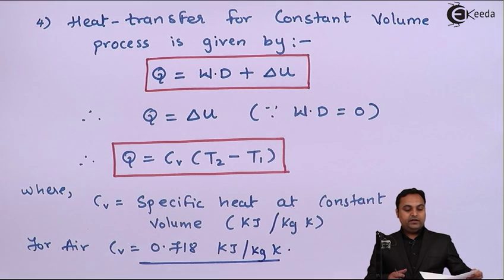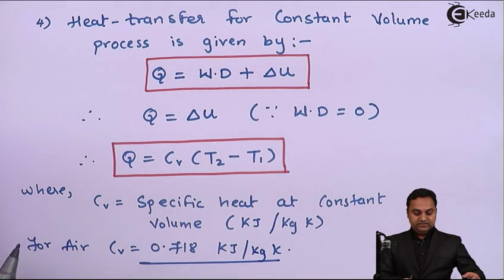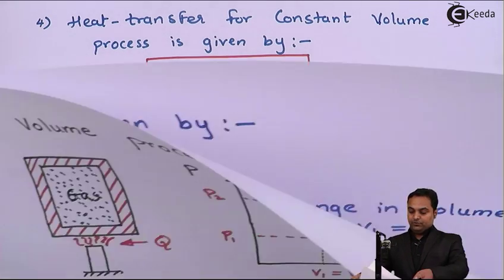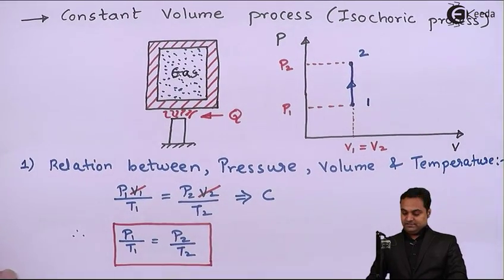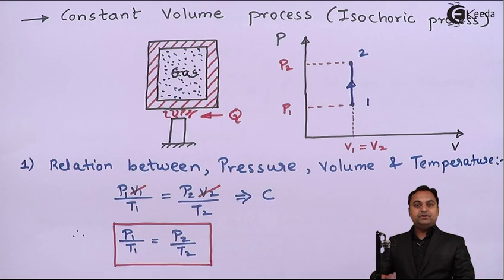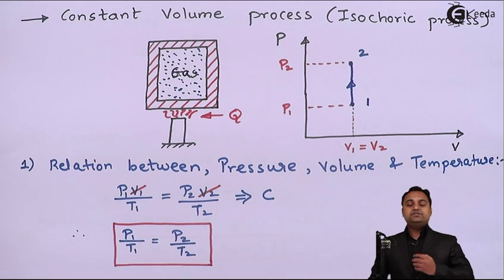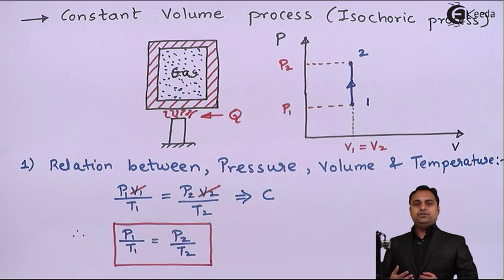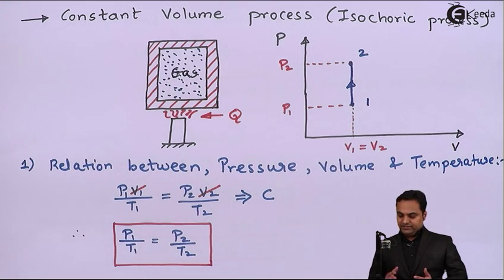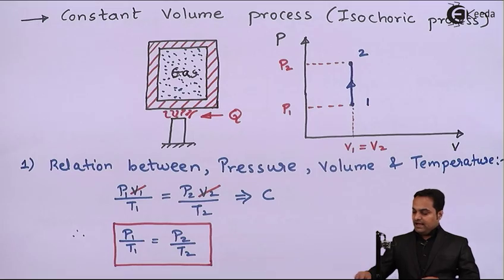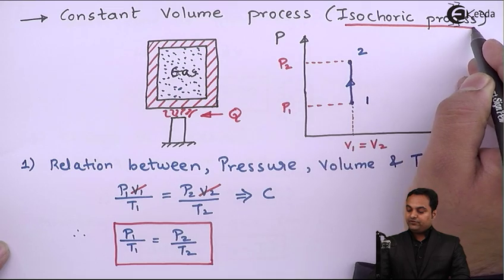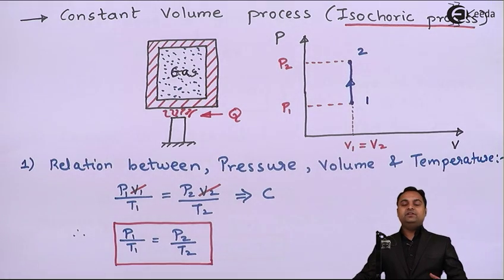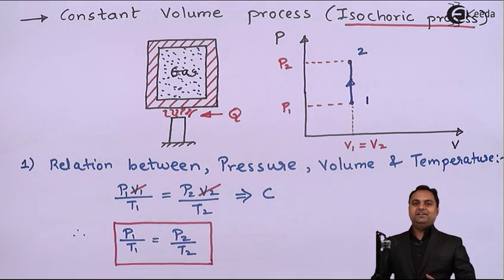So here we have seen that in the case of the constant volume process: the pressure-volume-temperature relation, the amount of work done which equals zero, the change in internal energy, and the heat transfer. The name of the process is the constant volume process, also called the isochoric process. In this video we have seen this complete process in detail.